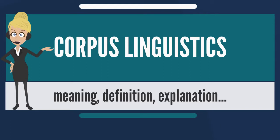The Brown Corpus has also spawned a number of similarly structured corpora: the LOB Corpus (1960s British English), Kolhapur (Indian English), Wellington (New Zealand English), the Australian Corpus of English (Australian English), the Frown Corpus (early 1990s American English), and the FLOB Corpus (1990s British English).